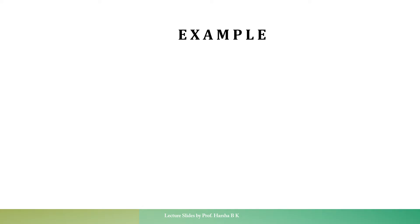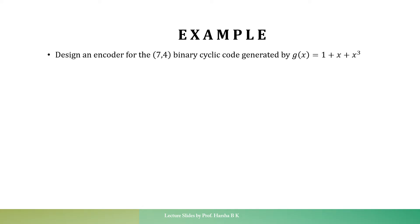Let us consider this example: Design an encoder for the (7,4) binary cyclic code generated by G(x) = 1 + x + x³.